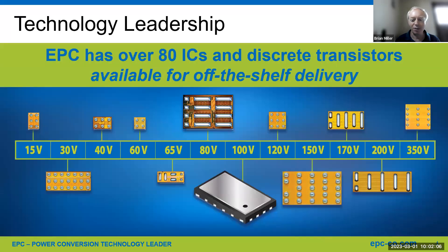Here's a little overview of some of the parts that EPC makes. You can see from 15 volts to 350 volts. The big range is, say, 40 volts up to 200 volts — that's where most of the EPC GAN FETs are located.